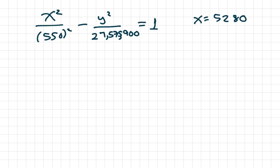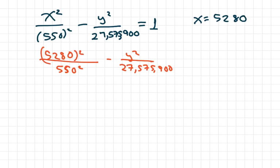So we do that. We've done that several times on these problems. So we're going to do substitution. So we get 5,280 squared over 550 squared minus Y squared over 27,575,900. Now to solve for Y, what I'm going to do is move the 1 over here and the Y squared over there.